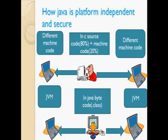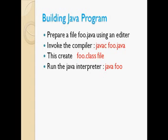Any machine or computer which has JVM installed can accept the bytecode, which makes Java platform independent and secure, because the .class file cannot be read by humans - it can only be understood by JVM. To build a Java program there are three steps: prepare a file with the .java extension in any editor, invoke the compiler using javac and the filename, and run the Java interpreter using java without any extension.